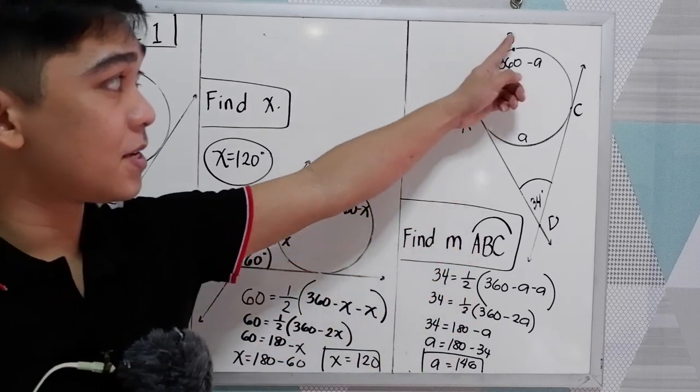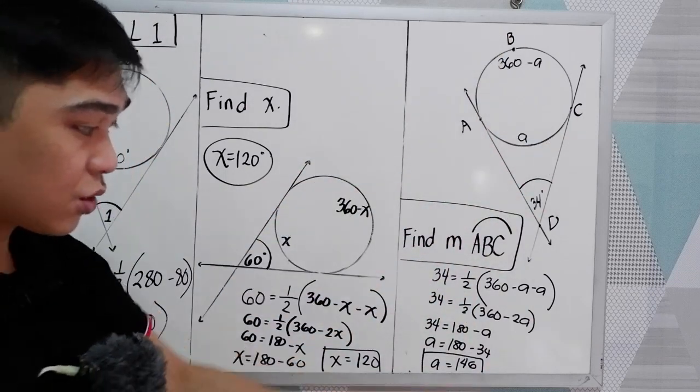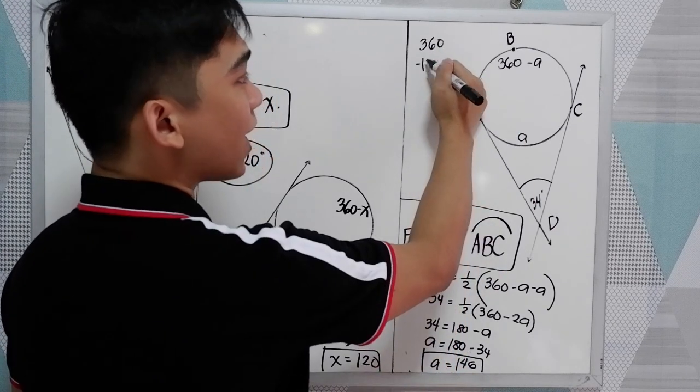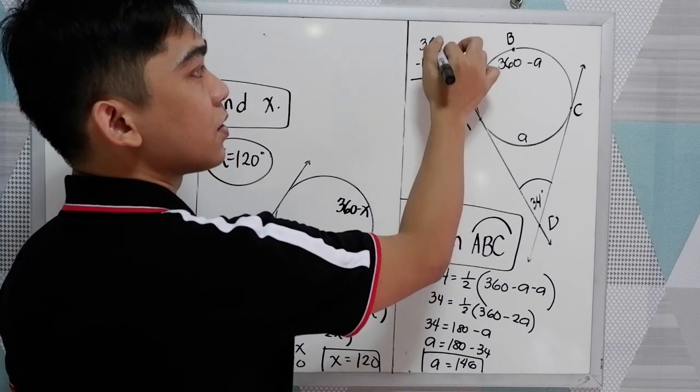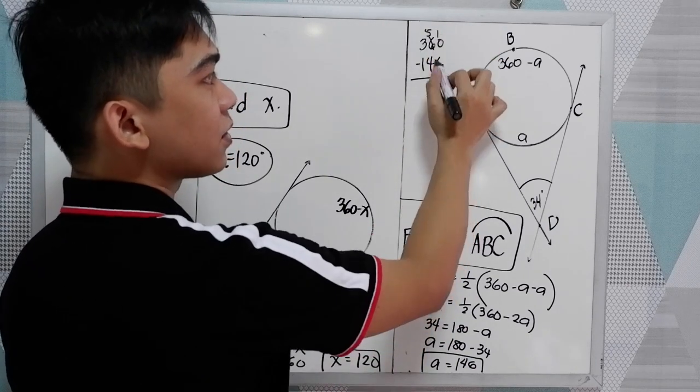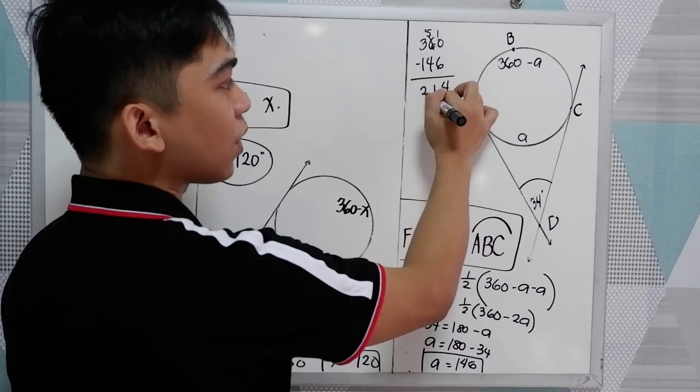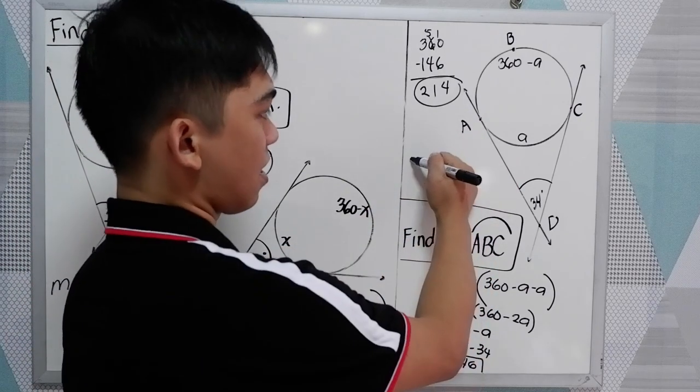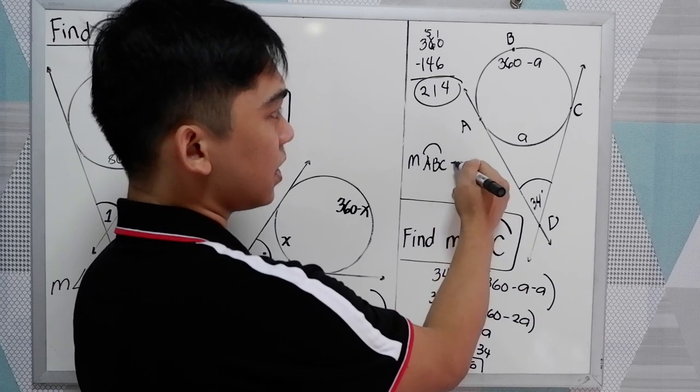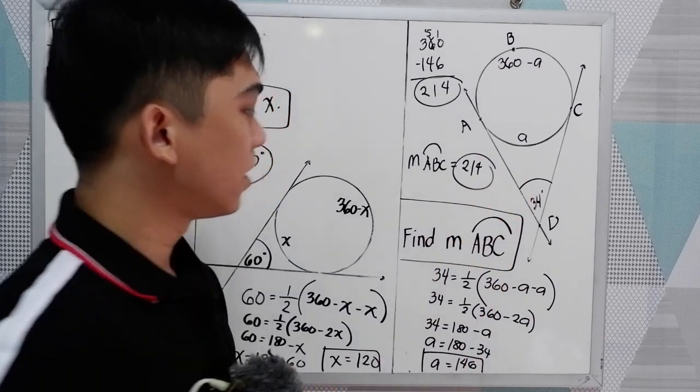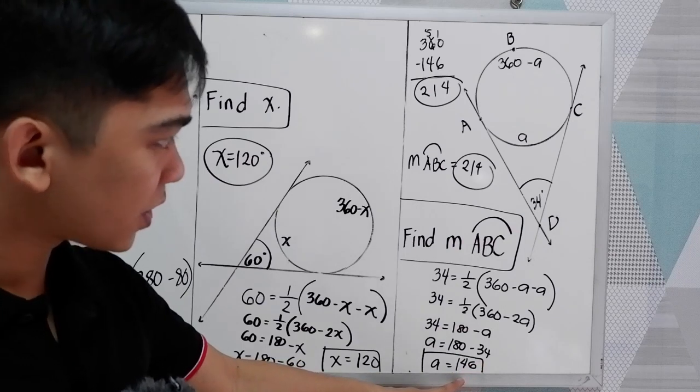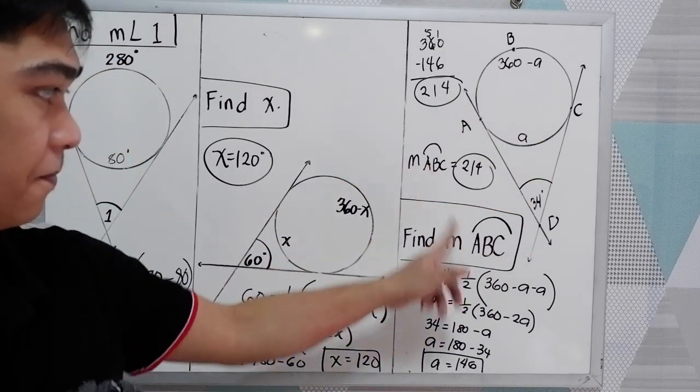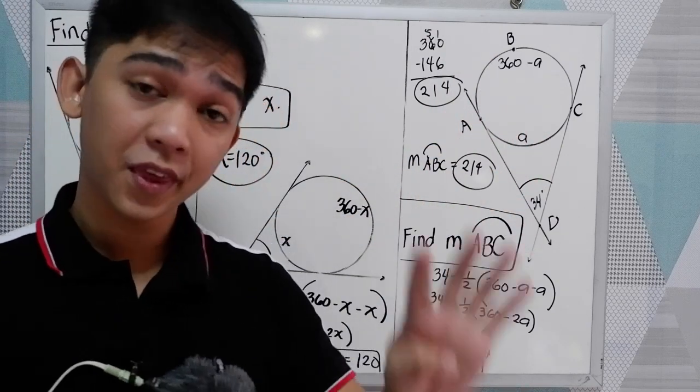We're going to find ABC, the arc ABC. So we need to subtract 360 minus 146, so that is 214. So 214 plus 146, it should give us 360 degrees, one revolution. So that's the application of our theorem number 4.